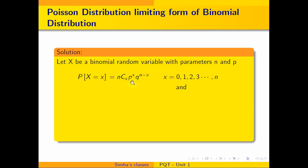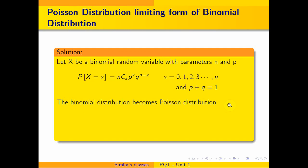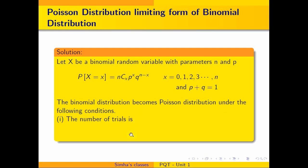Very importantly, what do we know about binomial distributions? p represents success and q represents failure. When we add these two, we get 1, so p plus q equals 1. The binomial distribution becomes a Poisson distribution under the following conditions. The first condition is that the number of trials n is very large — that is, n tends to infinity.